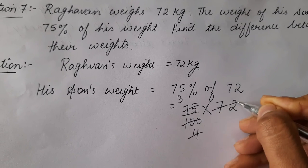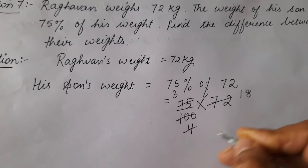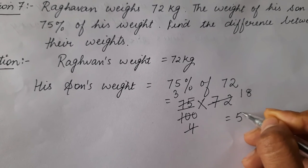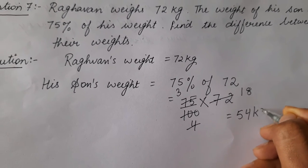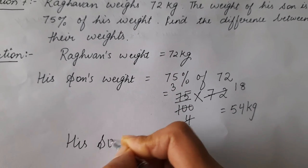25 fours are 100, four ones are 4, four ones are 4, four eights are 32. So 18 threes are 54 kg. His son's weight is 54 kg.